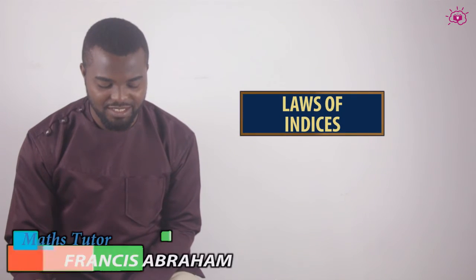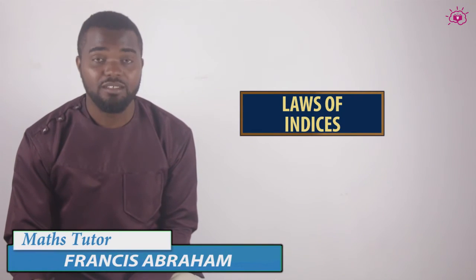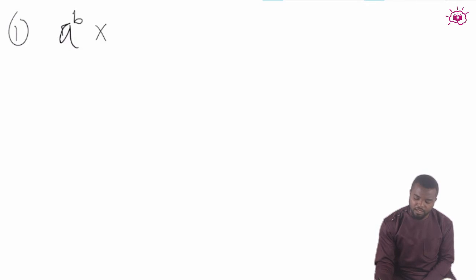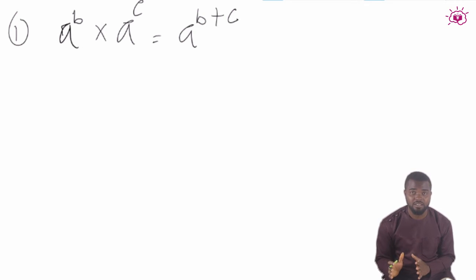Now to the laws of indices. The first law of indices is the product of numbers with the same base. That means when two numbers are multiplying themselves with the same base, you add their powers. An example would be a raised to the power b times a raised to the power c. This would be equal to a raised to the power b plus c.